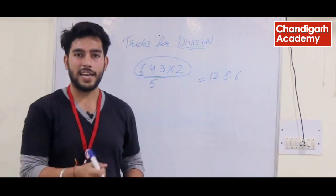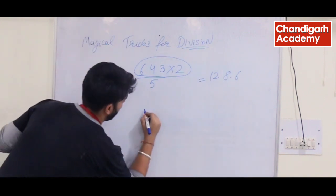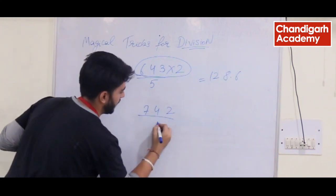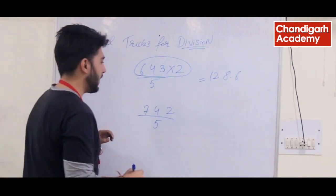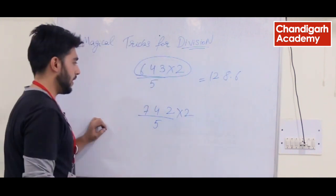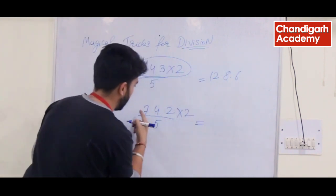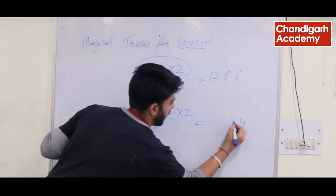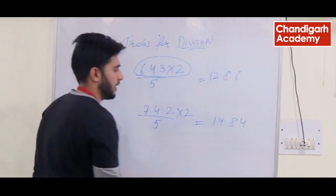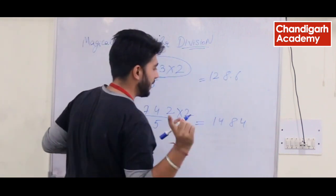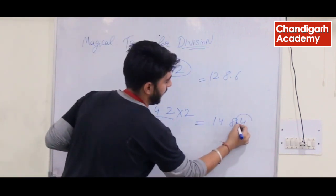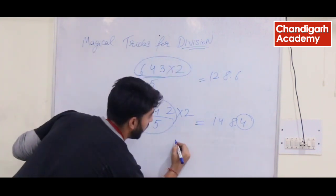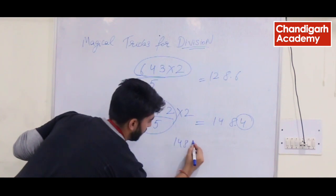It's easy! Let's take one more example. We have to divide 742 by 5. We multiply it by 2: 2×2 is 4, 4×2 is 8, 7×2 is 14. After that, leave the last digit and put a decimal point. So the answer will be 148.4.